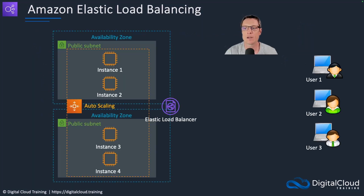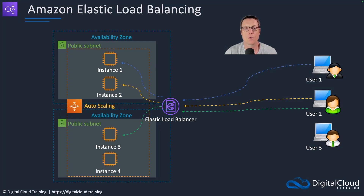Let's have a look at it in action. Here we have a few EC2 instances deployed in an ASG — an auto scaling group — across multiple subnets in different availability zones. When users come in, the load balancer is automatically distributing connections. If an instance fails, then it's going to be taken out of action.